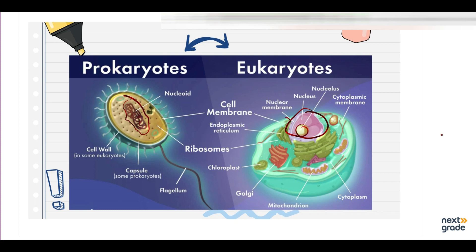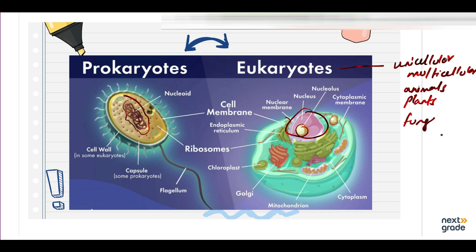Besides eukaryotes, all the unicellular and multicellular organisms come under this category — like animals, plants, fungi, and protista. These all are eukaryotes. But prokaryotic cells include bacteria and blue-green algae.